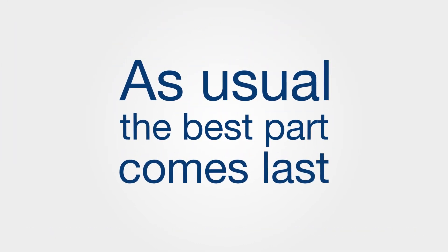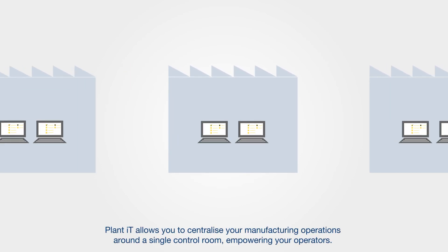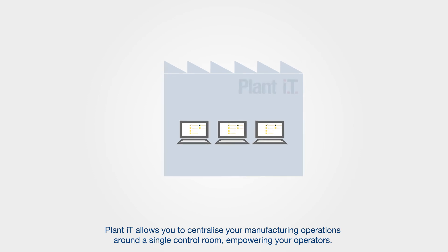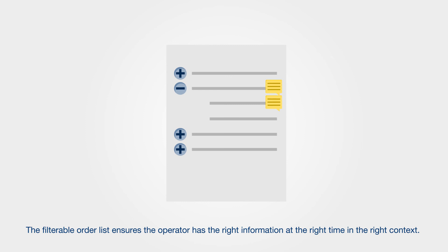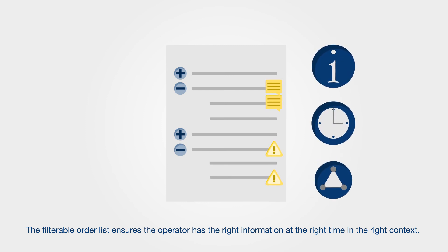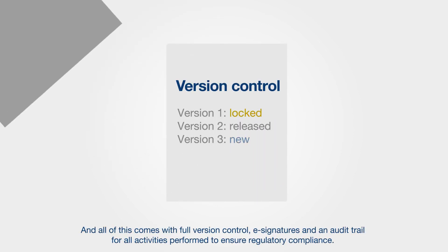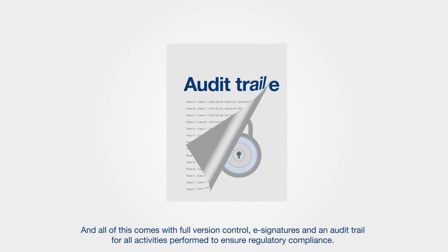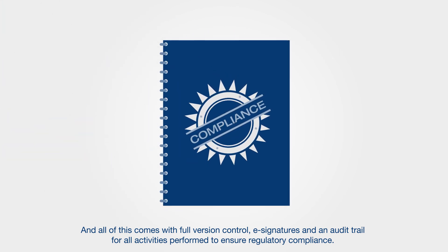Plant IT allows you to centralise your manufacturing operations around a single control room, empowering your operators. The filterable order list ensures the operator has the right information at the right time, in the right context. And all of this comes with full version control, e-signatures and an audit trail for all activities performed to ensure regulatory compliance.